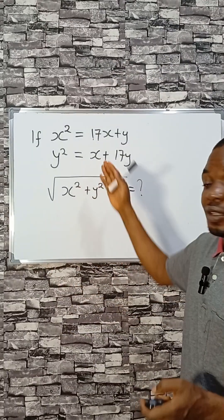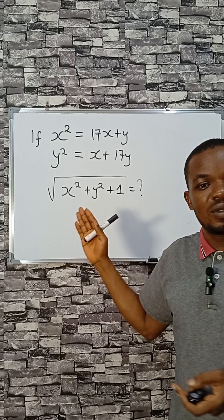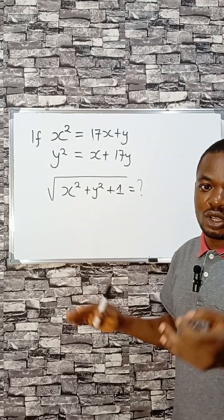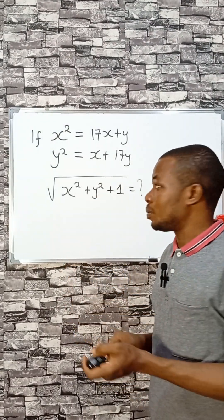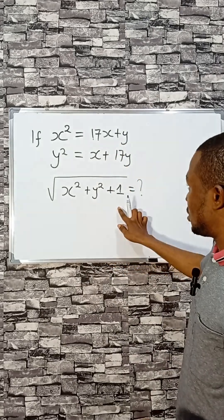The equation on the board is simple but logical, so many students may fail this. If you can solve this alone, then you are a genius. Let's solve together. We are asked to find the square root of this.